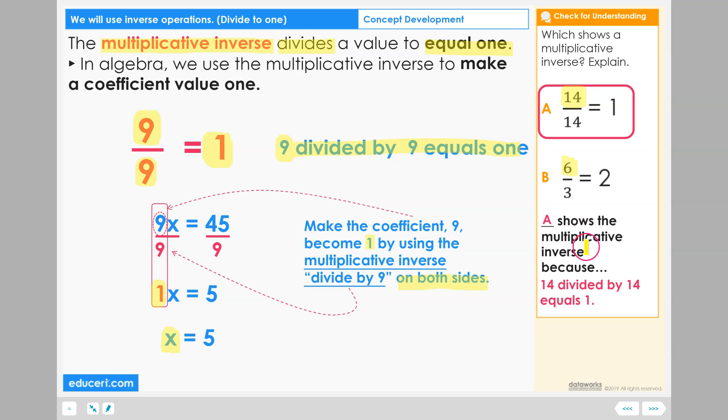A shows the multiplicative inverse because 14 divided by 14 equals one. It's all about the value that we start out with and then divide by the exact value to make sure that it divides and equals one.